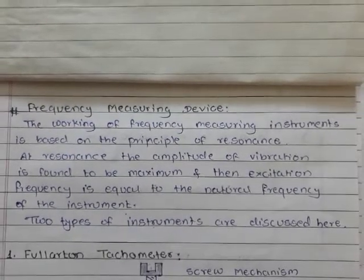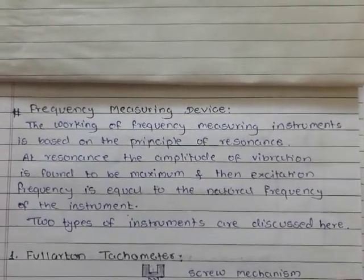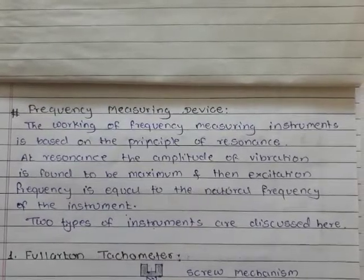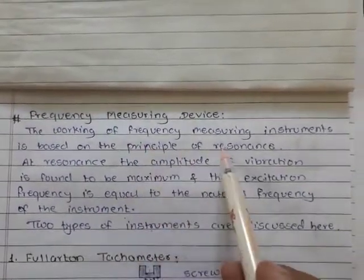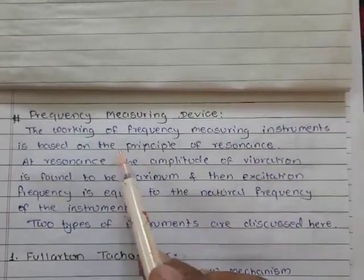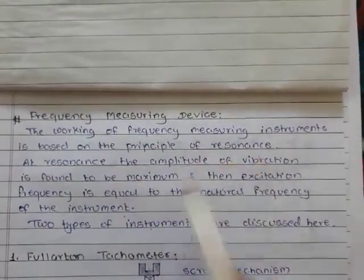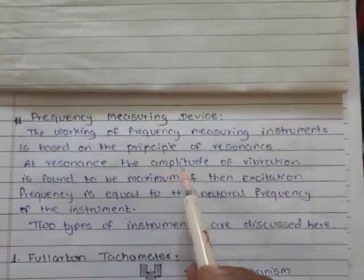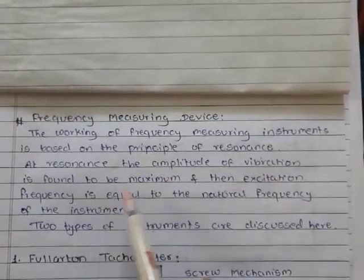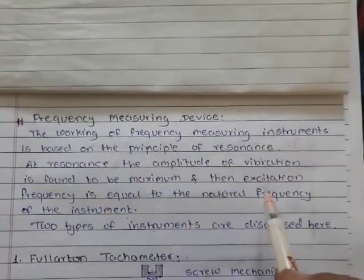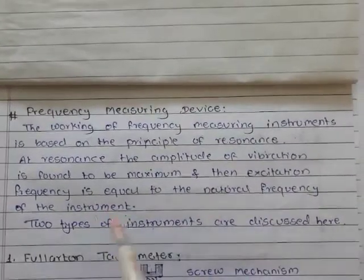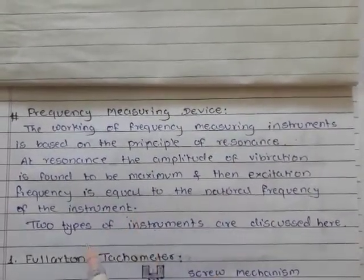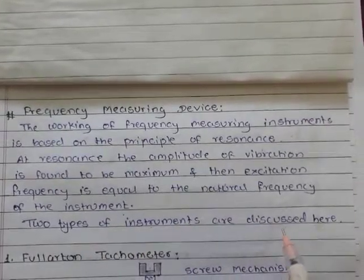Hello dear friends, myself J.R. Choudhury. Today I will explain about frequency measuring devices. The working of frequency measuring instruments is based on the principle of resonance. At resonance, the amplitude of vibration is found to be maximum, and then excitation frequency is equal to the natural frequency of the instrument. Two types of instruments are discussed here.